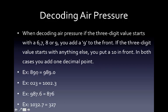For example, the first two here you see, you have a pressure of 890 listed on your station model. You add a 9 to the front and then put a decimal place at the end. If you have something like 023, you put a 10 in front and then put a decimal place in. Here are the examples of going the opposite way, which hopefully you are already familiar with.